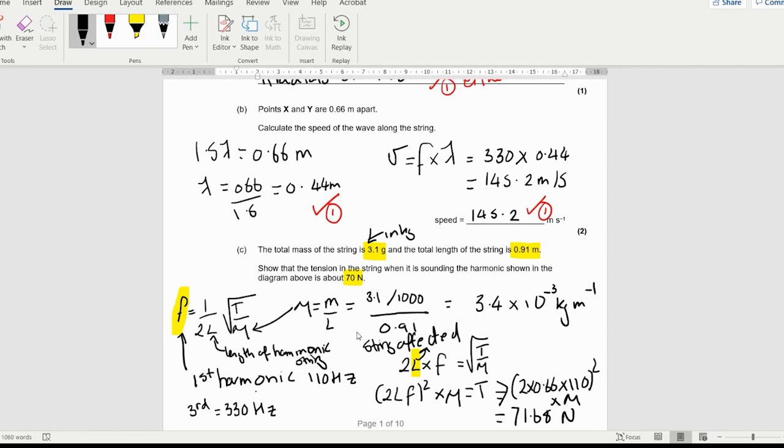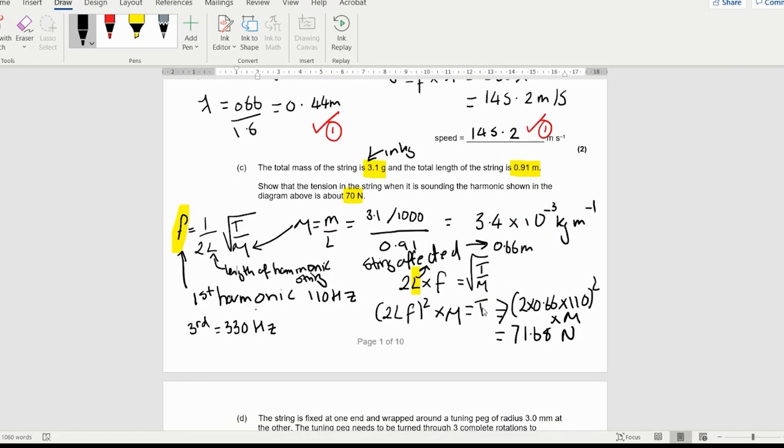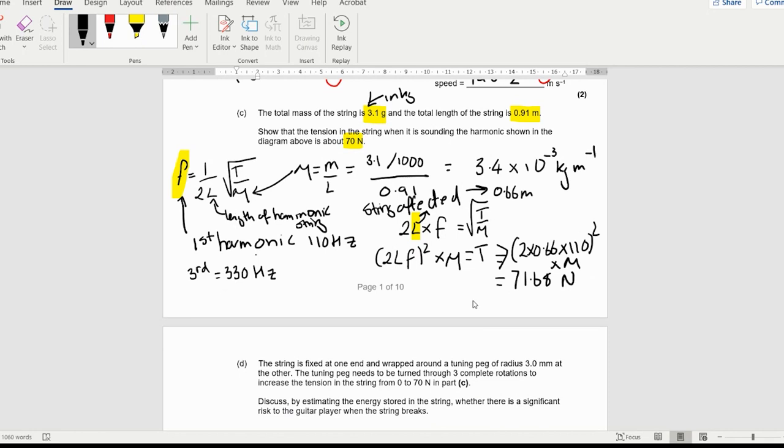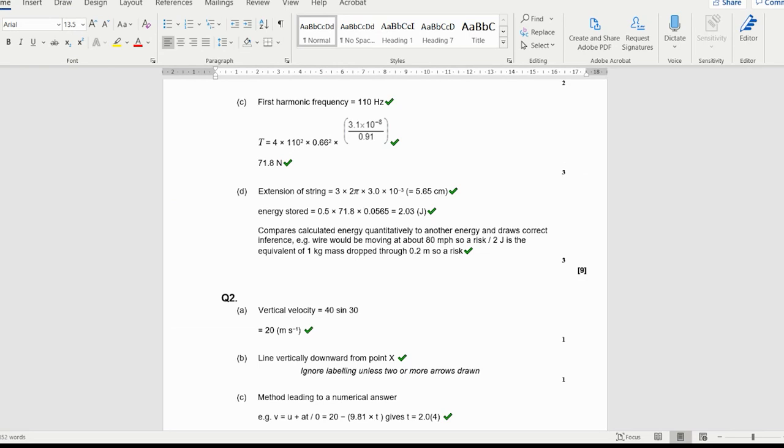It's actually really, really mean when they're using different letters for L and what they mean. It's really important that you understand. When you're doing mu, this is like a density, so it's a constant over the string. It doesn't matter how long the string, the ratio between the mass and its length will be consistent at 3.4 times 10 to the minus 3. When you're doing the fundamental harmonic question, L is the length of the harmonic that the string is dealing with, which is 0.66. It's a very mean question.